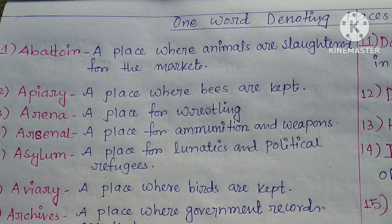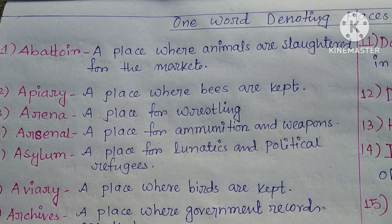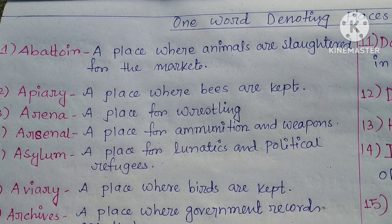Apiary — a place where bees are kept. This is very important; this question has come many times in previous years. Arena — a place for wrestling.